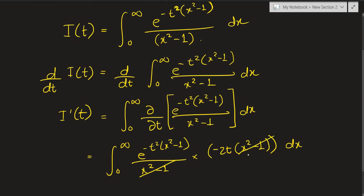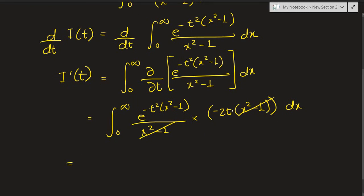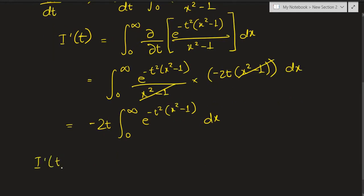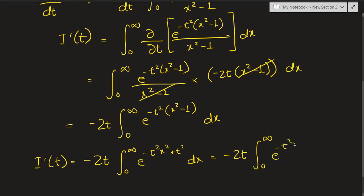So I prime becomes: negative 2t is a constant with respect to x, so we take it outside. We have negative 2t times the integral from 0 to infinity of e raised to negative t squared times x squared minus 1, dx. Writing this out, we separate the argument so we have e raised to negative t squared times x squared, and then the negative negative gives a positive t squared. By the properties of exponents we split this into e raised to negative t squared times e raised to t squared times x squared, all multiplied together.